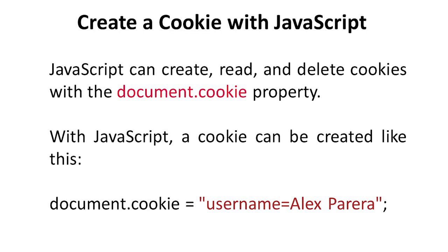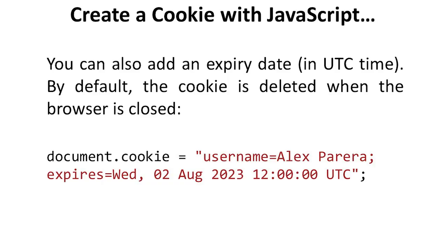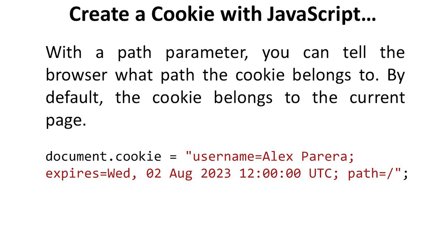You can provide any username of your own. You can also add an expiry date in UTC time. By default, the cookie is deleted when the browser is closed. For example: document.cookie = "username=Alex Pereira; expires=Wednesday, 02 August 2023 12:00:00 UTC". By default, the cookie belongs to the current page, but with the path parameter, you can tell the browser what path the cookie belongs to.